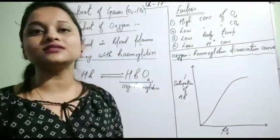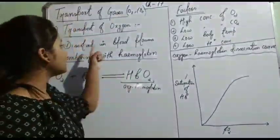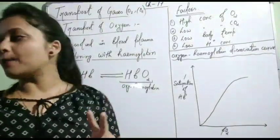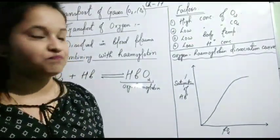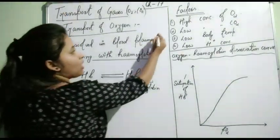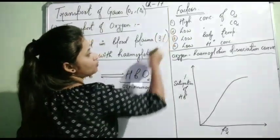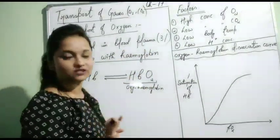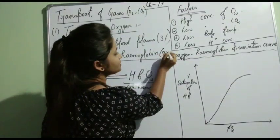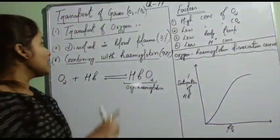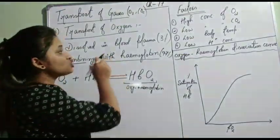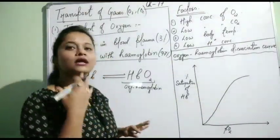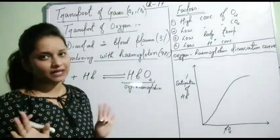There are two means of transport of oxygen in our body. First is by dissolving in blood plasma, and the second way is by combining with hemoglobin. About 3% of total oxygen is transported by dissolving in blood plasma. Blood plasma is the liquid portion of the blood, where oxygen is dissolved and transported.